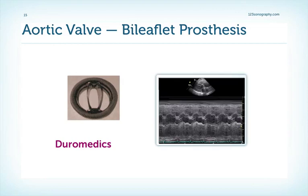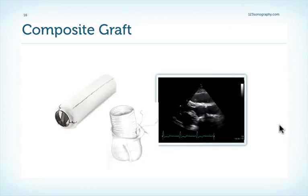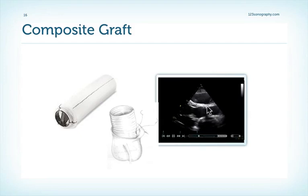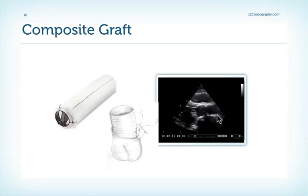Here's another trick: use M-mode. In patients who have mechanical valves, you will see repetitive echoes during systole, which mark the opening of the prosthetic valve. In patients who have a biological valve, you will see the typical box that you also see in a normal aortic valve.